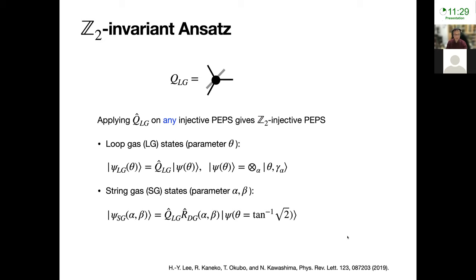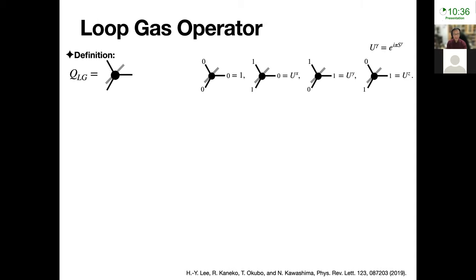The ansatz we use is a Z2 invariant ansatz — a loop gas ansatz — which is a projector. If you apply this projector to any injective tensor, it will give you a Z2 invariant PEPS. One can tune the initial product state to get different loop gas wave functions, and also try to generalize this by applying another projector. The loop gas projector has certain properties and some definition of the loop gas projector.